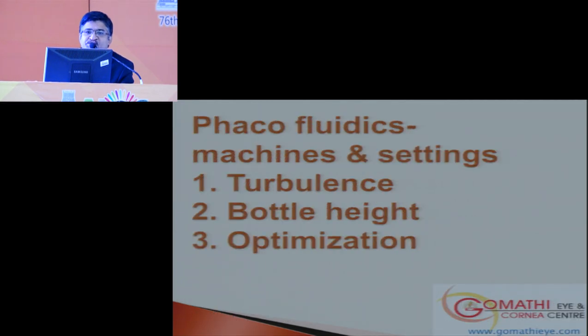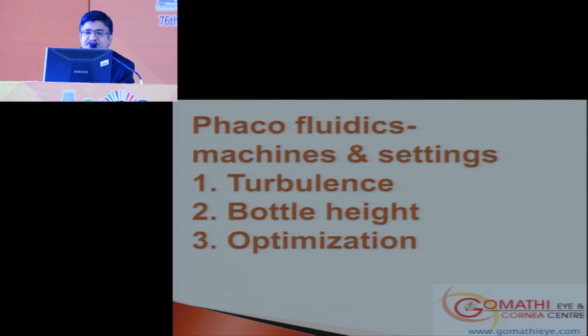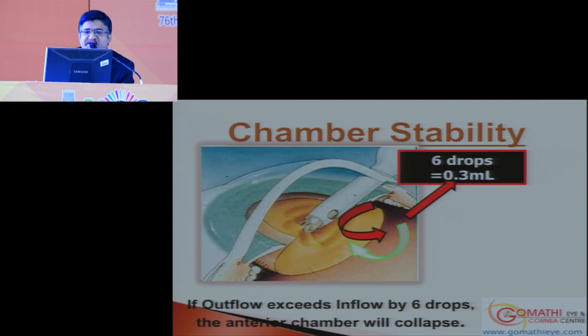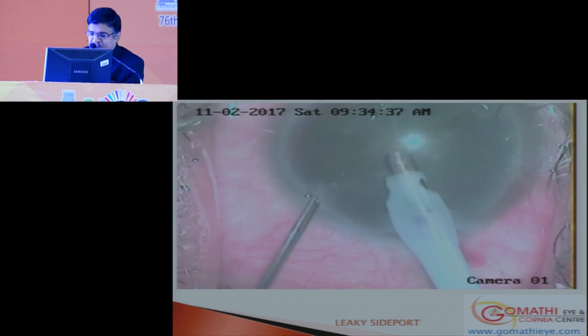My part of the course discusses turbulence, bottle height, and optimization of these factors. The chamber will be stable if inflow equals outflow — in fact, inflow should be slightly greater than outflow. If outflow exceeds inflow, the chamber collapses, making phacoemulsification difficult. In a video example, a side port slightly larger than normal creates a leak causing shallowing of the anterior chamber, with the iris extending because of chamber instability — here outflow exceeded inflow.